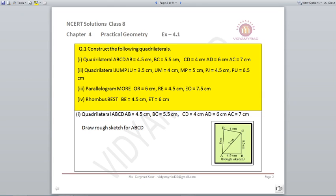Now for this exercise you need a geometry box as we will be doing the construction. Now here your question number 1 states that you have to make certain quadrilaterals and the measurements of those quadrilaterals are given to you.